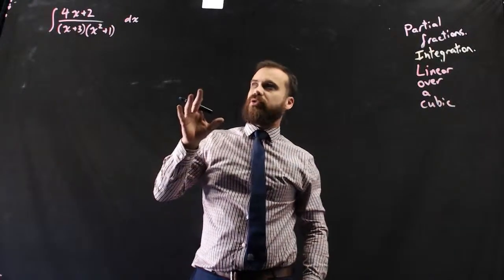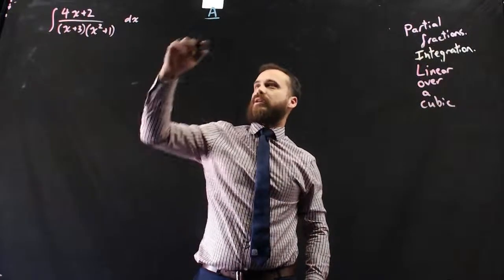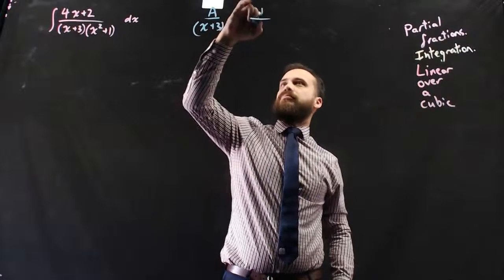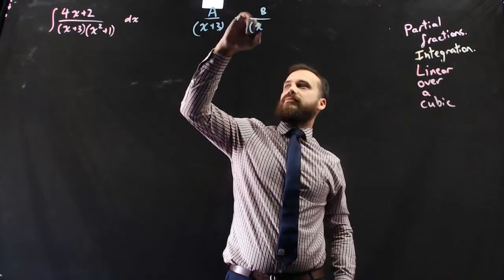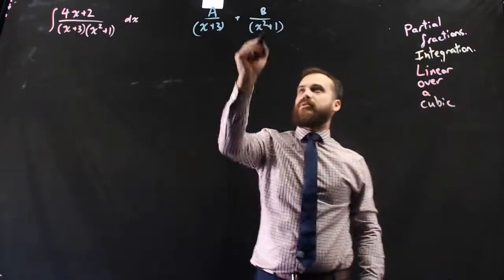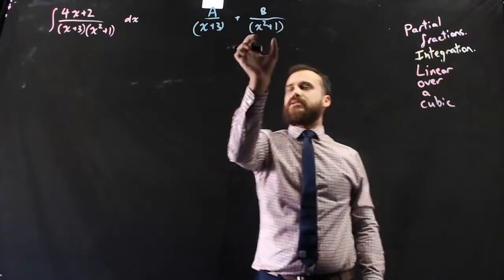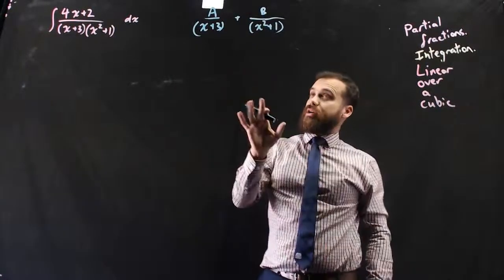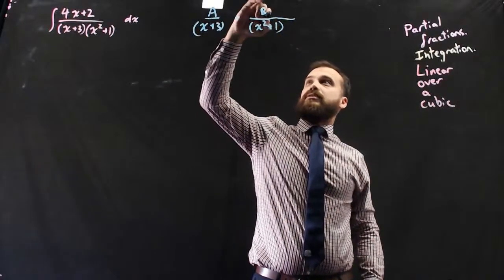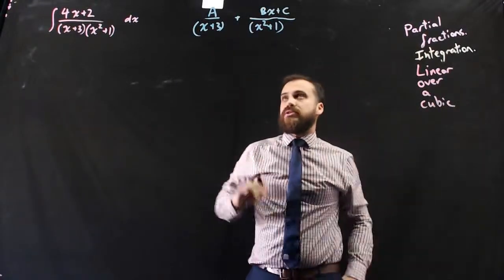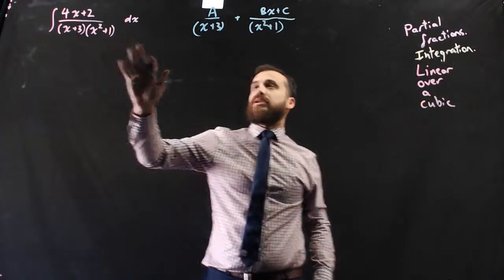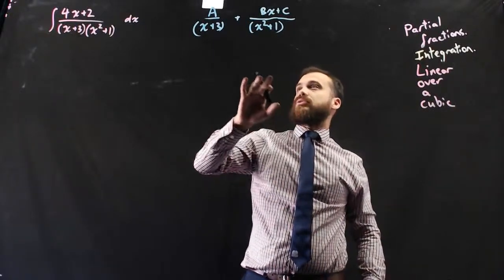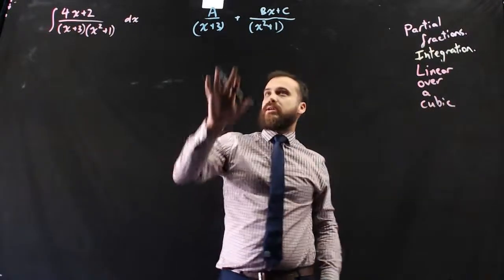So the rule that we've used in the past, which is a over that plus b over that, doesn't quite work anymore. Because these needed to be linear terms and this needed to be a quadratic. What you actually need is bx plus c. So when there's a cubic underneath, you're going to end up with a and then bx plus c as your next term.